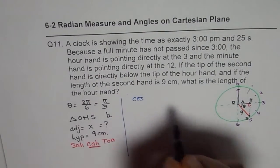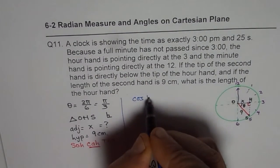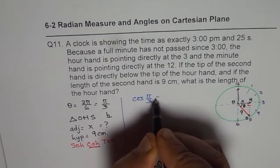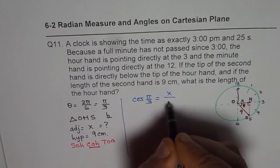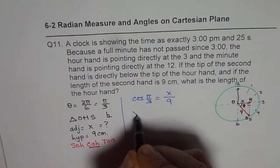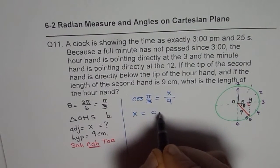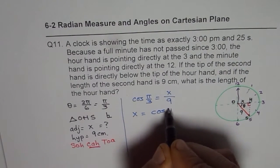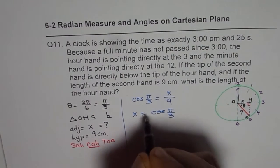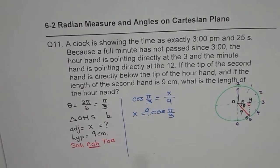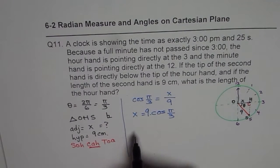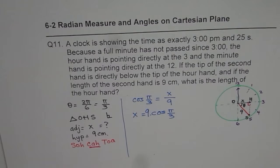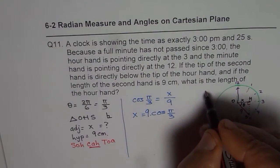We say cos of the angle theta which is pi by 3 should be equal to adjacent side of x divided by hypotenuse of 9. So x equals cos of pi by 3 times 9. Now you can use calculator and find the answer also. But cos pi by 3 is what? You could use special triangles. I prefer to use special triangles here.